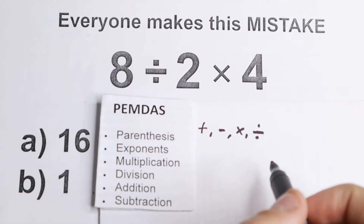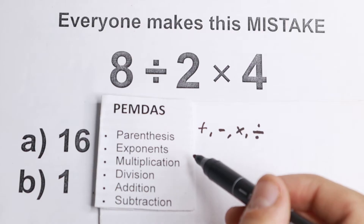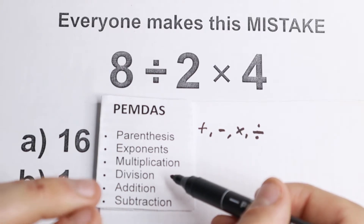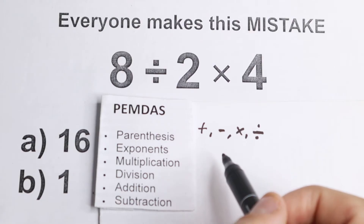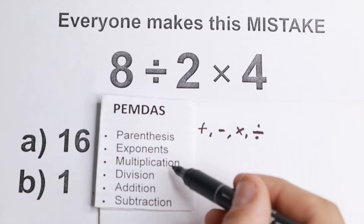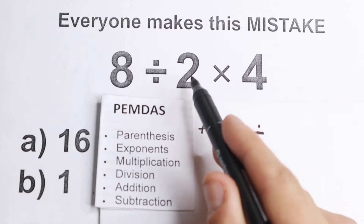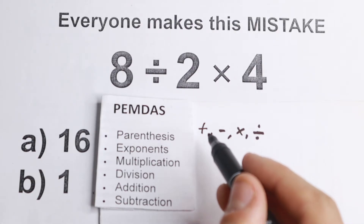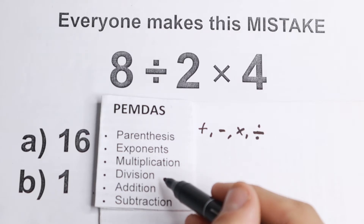So how does it work? You definitely do parentheses first, then powers or exponents. However, when you get to the multiplication and division part, you work from left to right — whatever comes first. So if you have division then multiplication, you do division first. If you have multiplication then division, you do multiplication first. Think of multiplication and division as one group, handled left to right.